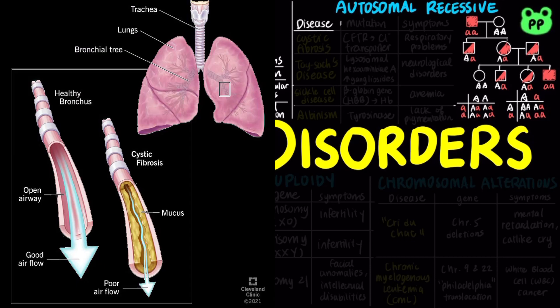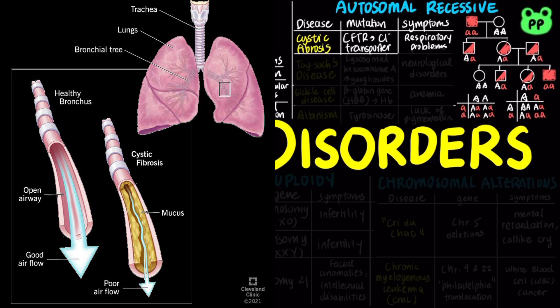Cystic fibrosis is an autosomal recessive disorder caused by mutation in the CFTR gene, which encodes a chloride transporter, leading to respiratory problems such as coughing and wheezing.